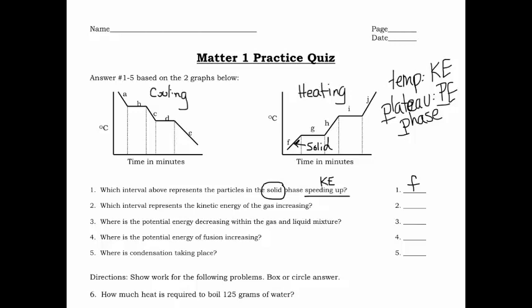Number two: which interval represents kinetic energy increasing in the gas phase? We're talking about the sloped portion of the graph, and since it's increasing, this is from the heating curve. We've narrowed it down to the sloped portions of the heating curve, and now we have to figure out which one is gas. Gas is going to be the top one right here, so that's going to be letter J.